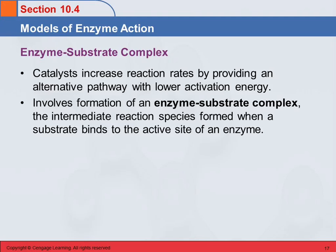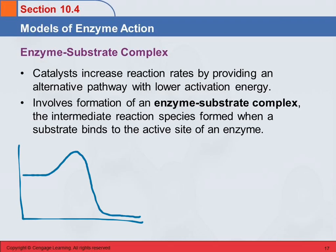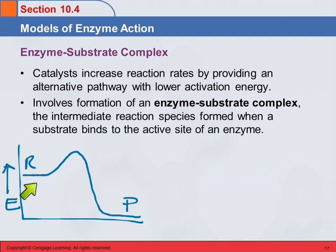Catalysts increase reaction rates by providing an alternative pathway with a lower activation energy. In chemical reactions, there is often an activation energy barrier. On an energy diagram, the reactants and products are plotted on the vertical axis. This reaction is energetically favorable because the products are lower in energy than the reactants, but in order for the reaction to occur, we have to get up and over this hump — a bit like those humps in miniature golf greens. What the catalyst does is provide an alternative lower-energy pathway, lowering this activation energy hump so it's easier to get over.